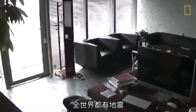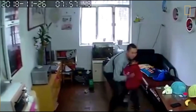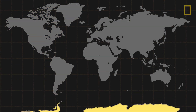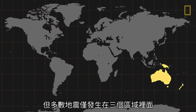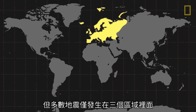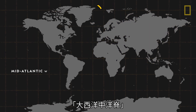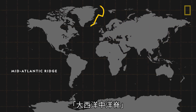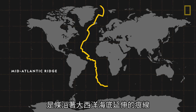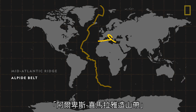Earthquakes occur around the world. They've been recorded on all seven continents, but most quakes take place in just three regions: the Mid-Atlantic Ridge, an underwater line that runs down the Atlantic Ocean, and the Alpine Belt,